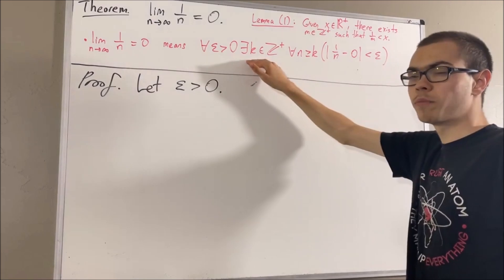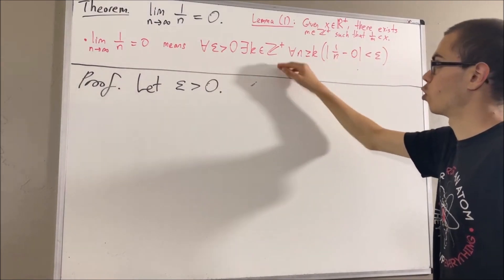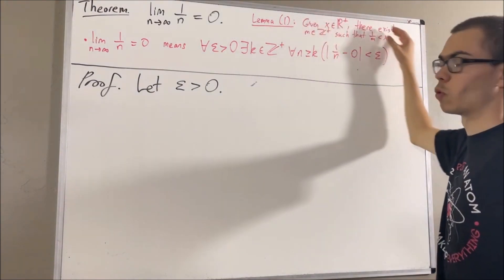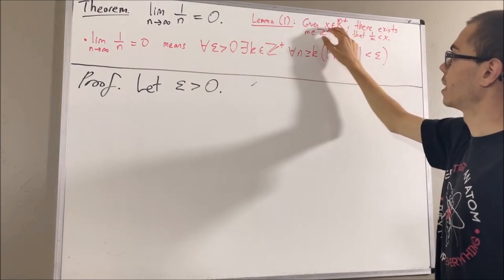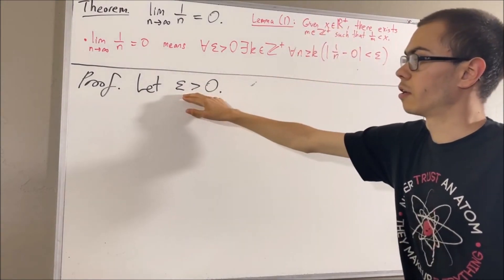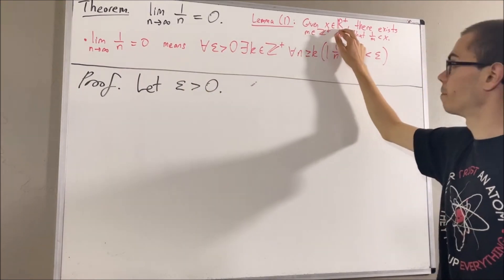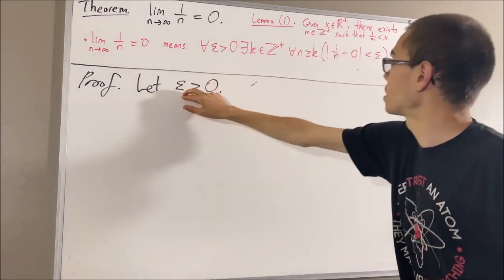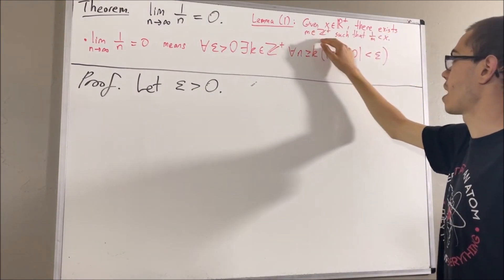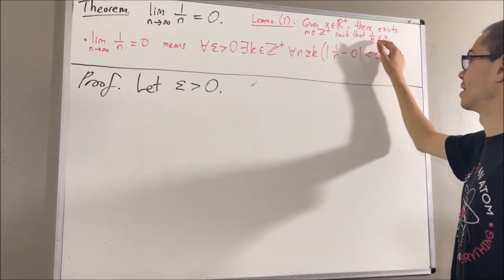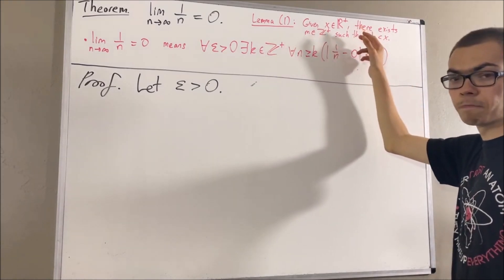How are we going to obtain this positive integer k? Well, in our scratch work we said that we were going to apply Lemma 1. So let's apply Lemma 1. In applying Lemma 1, we're going to take x to be epsilon — we can do that because epsilon is a positive real number. So taking x to be epsilon, we have that there exists a positive integer m such that 1 over m is less than epsilon. And I'll call that positive integer k.